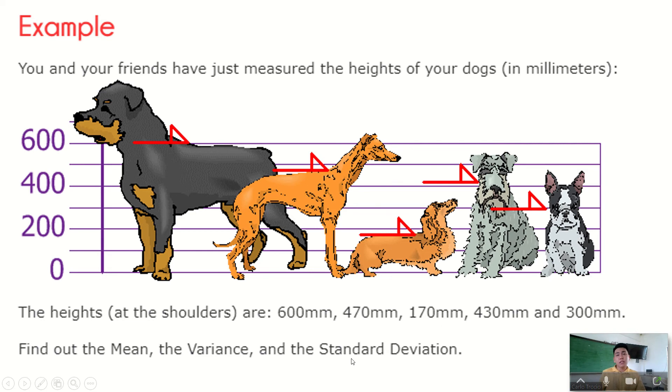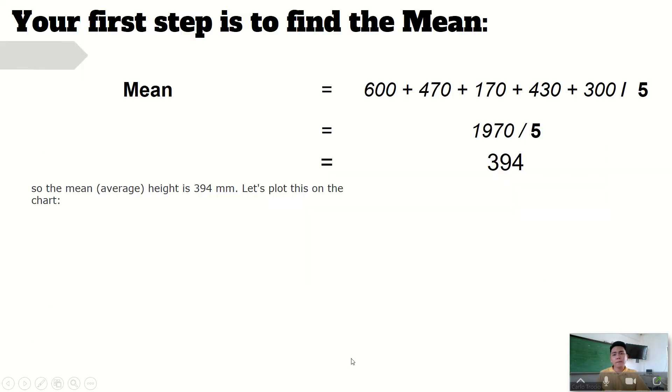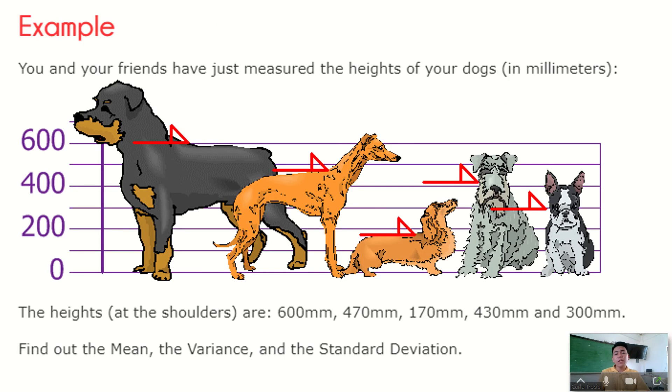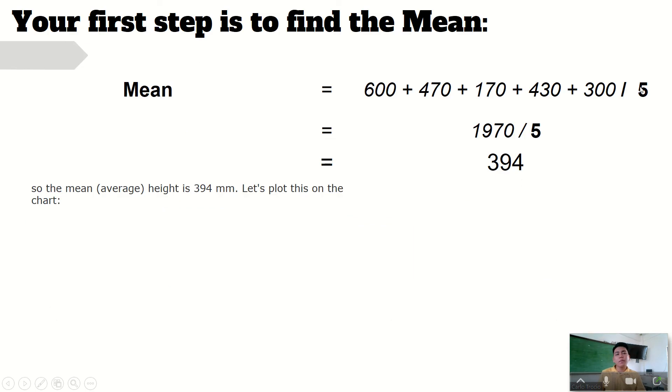We are asked to find the mean, variance, and the standard deviation. How to find it? So first step is the mean. This is very simple. You are just going to add all the data that you have and divide it by the total number of data, which is 5.